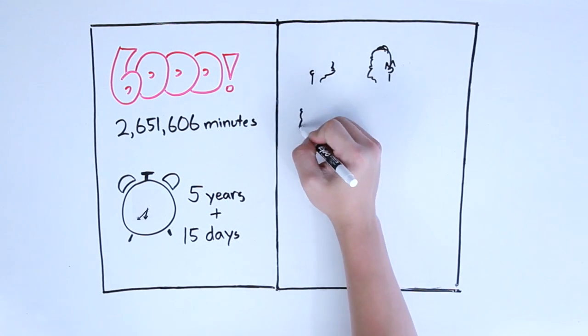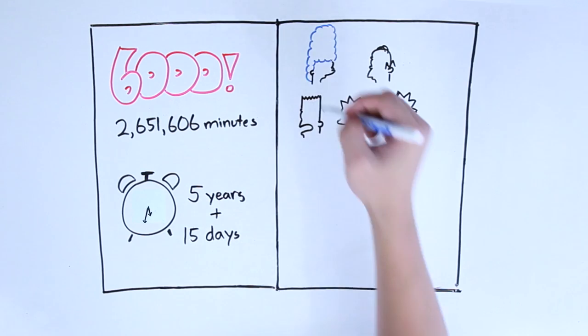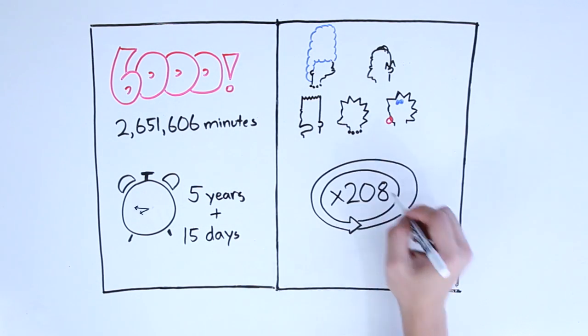That's 5 years and 15 days. To put this into perspective, in those 5 years you would be able to watch all 25 seasons of The Simpsons 208 times.